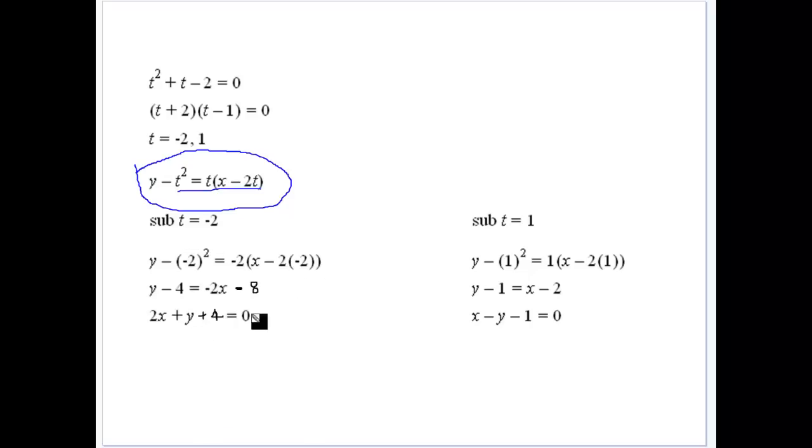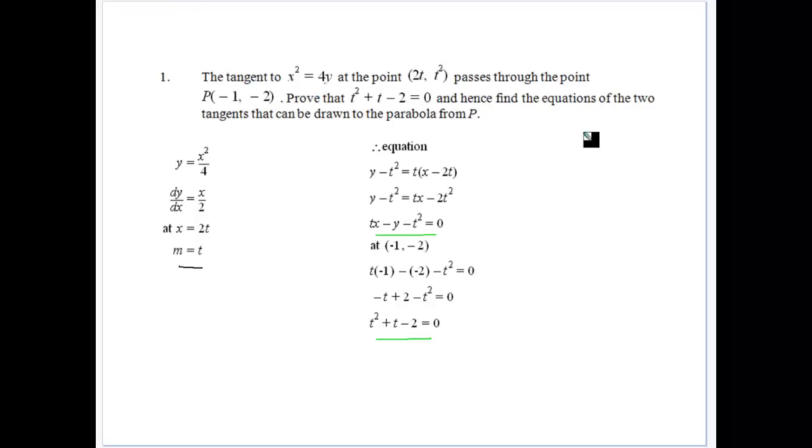So we substitute minus 2 in, and we get 2x plus y minus 4. Sub 1 here, we get x minus y minus 1, when t is equal to those two values. And what are those two values giving us? It's going to give us 2 tangents that can be drawn to the parabola from that point P.